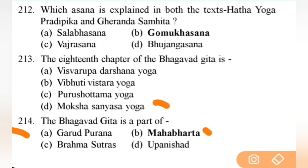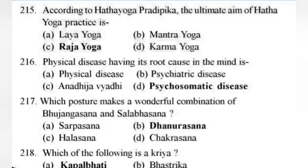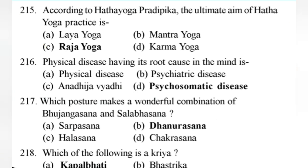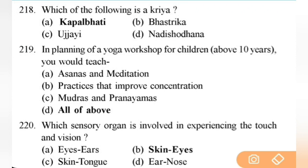According to Hatha Yoga Pradipika, the ultimate aim of Hatha Yoga practice is — right answer is C — Raja Yoga. Next: a physical disease having its root cause in the mind is — right answer is D — psychosomatic disease — this question is very important, write it down. Next: which posture makes a wonderful combination of Bhujangasana and Shalabhasana? Right answer is B — Dhanurasana.